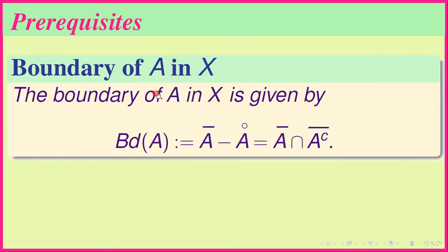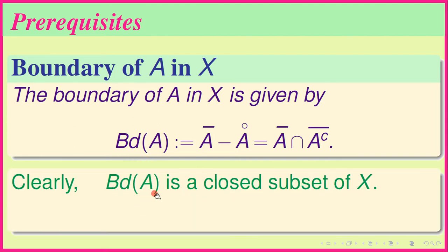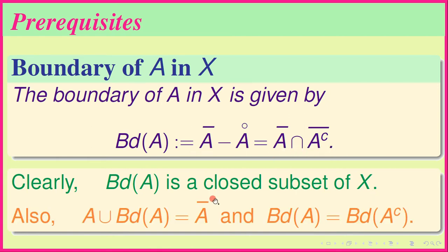The boundary of A in X is given by the set-theoretic difference between Ā and A°, which is the same as Ā ∩ (A complement)̄. The notation is Bd(A). Clearly the boundary of A is a closed subset of X, since it is the intersection of two closed subsets. Also, A ∪ Bd(A) equals Ā.